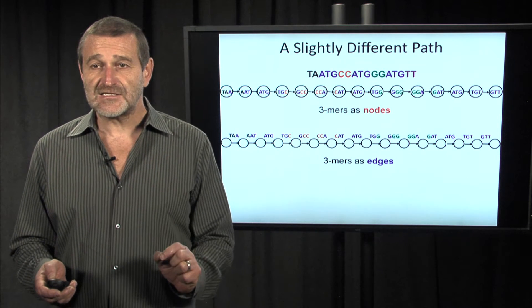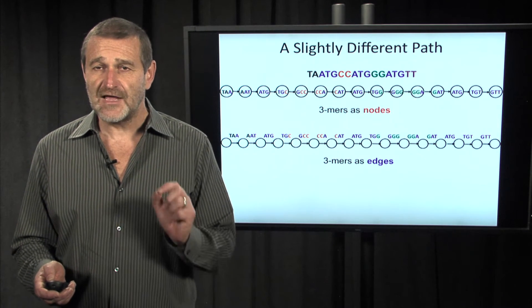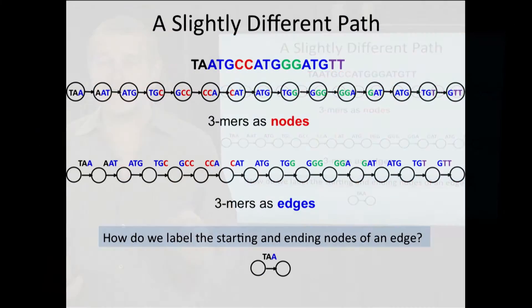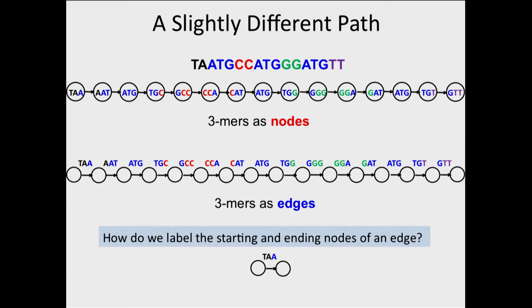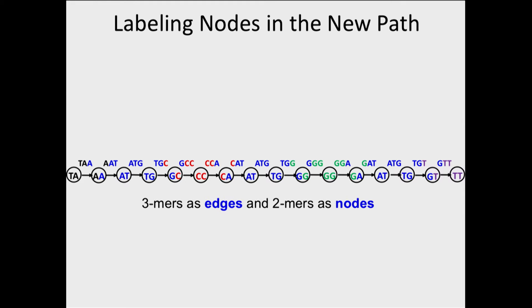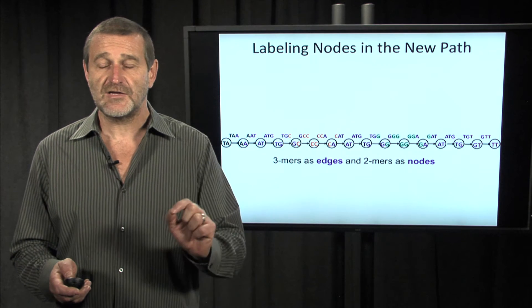If we label the edges of the graph, let's also try to label nodes of the graph. And how should we label the nodes of the edge TAA? Let's label the starting node by the prefix of TAA, and let's label the ending node by the suffix of TAA. As a result, we will have this graph shown below here. It's a path currently, not a graph yet. And this is our starting point, this path labeled by three-mers, where edges are labeled by three-mers, and nodes are labeled by two-mers.